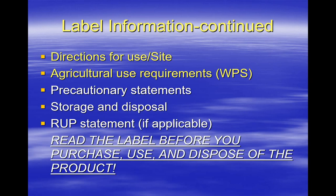In addition to the elements listed previously, the label must contain directions for use for the particular site where the applicator intends to use the pesticide, a WPS reference statement or agricultural use box if the pesticide will be used in a farm, forest, nursery, or greenhouse situation. Also, the label must include a precautionary statement, storage and disposal instructions, and a restricted use box if the pesticide is classified as an RUP by EPA. Directions for use and intended site of use must be on the pesticide label. If any of these items are missing from the label, the product is considered to be misbranded.